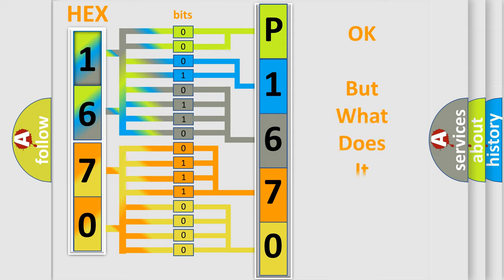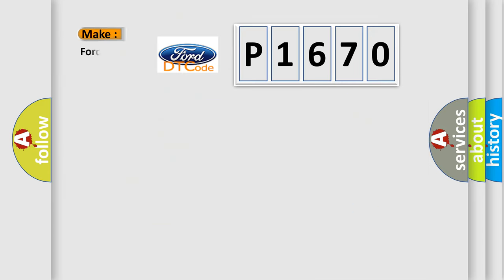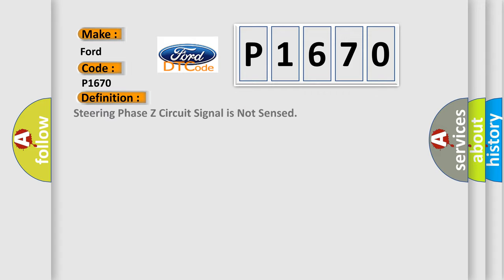The number itself does not make sense to us if we cannot assign information about what it actually expresses. So, what does the diagnostic trouble code P1670 interpret specifically for Infiniti car manufacturers? The basic definition is: Steering phase Z circuit signal is not sensed.